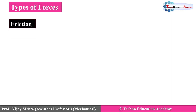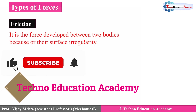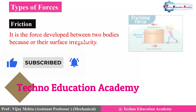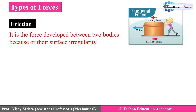The next type is friction force. It is the force developed between two bodies because of their surface irregularity. Whenever we apply a force on a body and it moves in the left-hand direction, the friction force acts in the opposite direction — that is, the right-hand side. Friction force always acts opposite to the direction of the applied force.